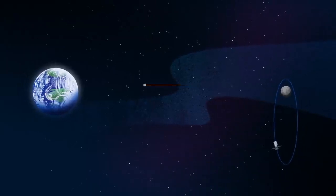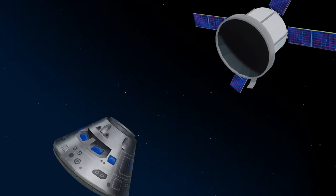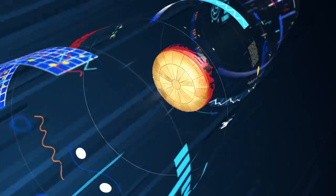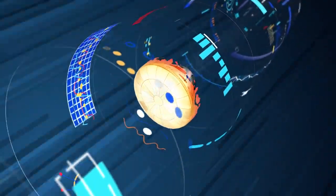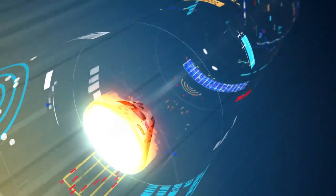As they near the end of this journey, the service module is released, and the crew module is oriented heat shield first. Entering Earth's atmosphere at 25,000 miles per hour, the friction of air slows Orion considerably, while also subjecting it to temperatures of 5,000 degrees.